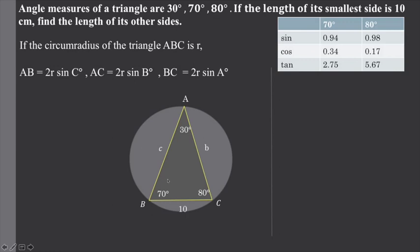The opposite side length equals 2R times sin of the angle. So we have BC length equals 2R times sin A. We know BC is 10, so 10 equals 2R times sin A, where sin A is the angle at A. We can find the circumradius R.